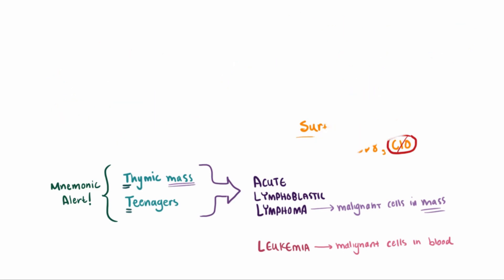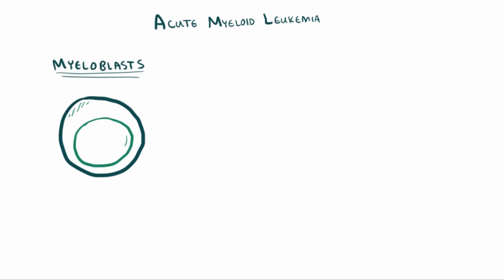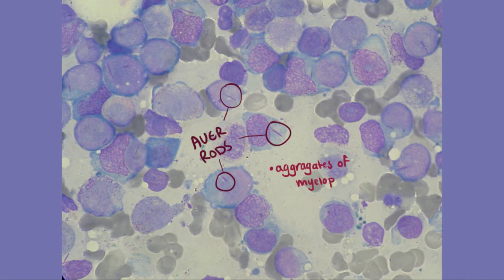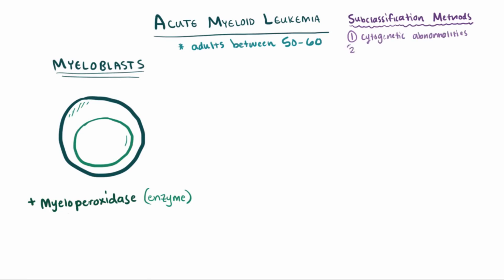That's all for the ALL type. Let's switch gears to the AML type, which is this accumulation of myeloblasts. Remember that we're looking for an enzyme called myeloperoxidase, which can present as Auer rods. This structure is an Auer rod — basically a crystallized aggregate of myeloperoxidase, which is only found in myeloblasts. AML, unlike ALL, is more common in adults between the ages of 50 and 60, and can be subclassified in three ways: by cytogenetic abnormalities, the lineage of the myeloblasts, or by surface markers.